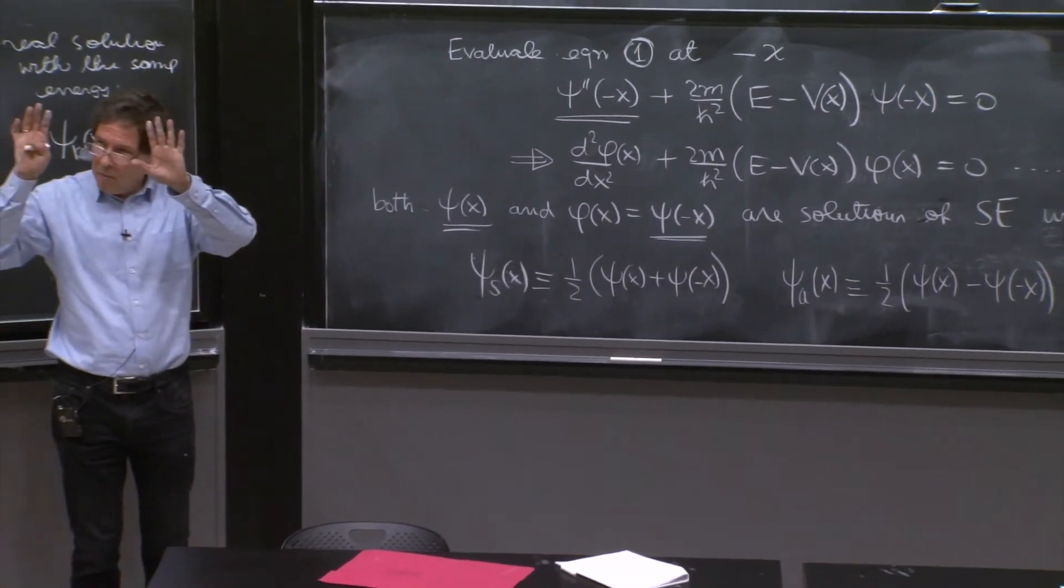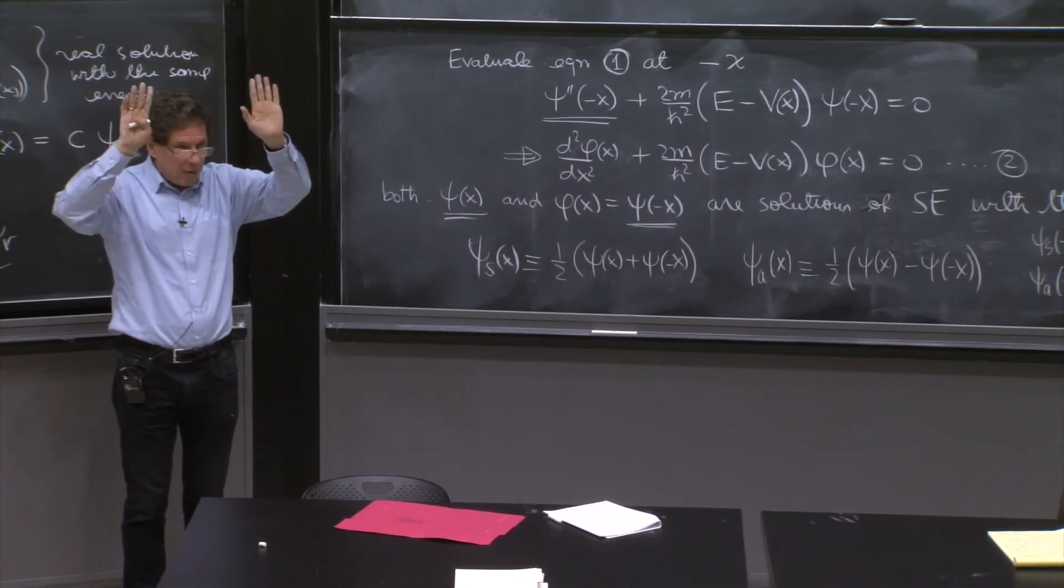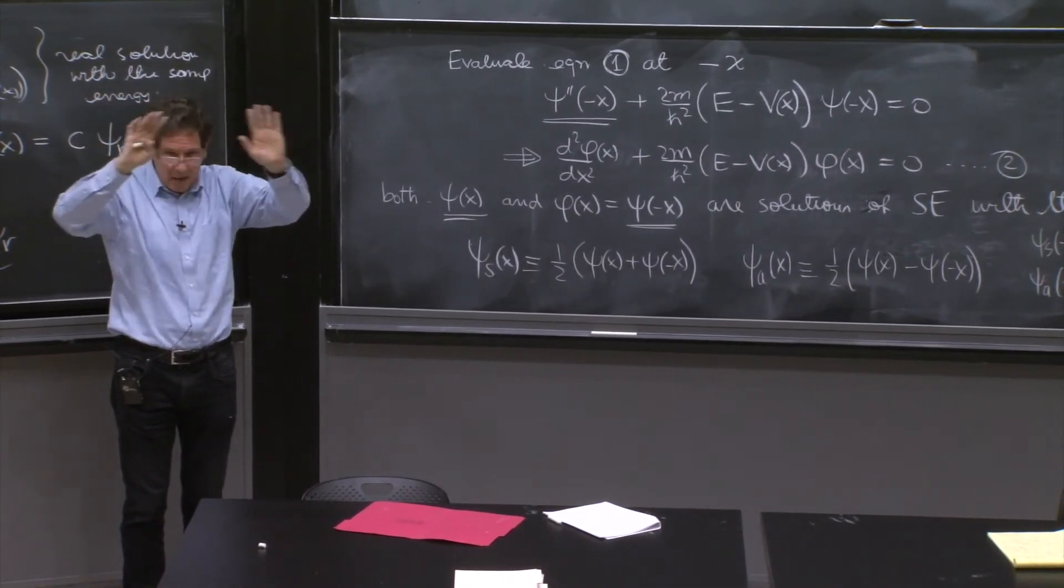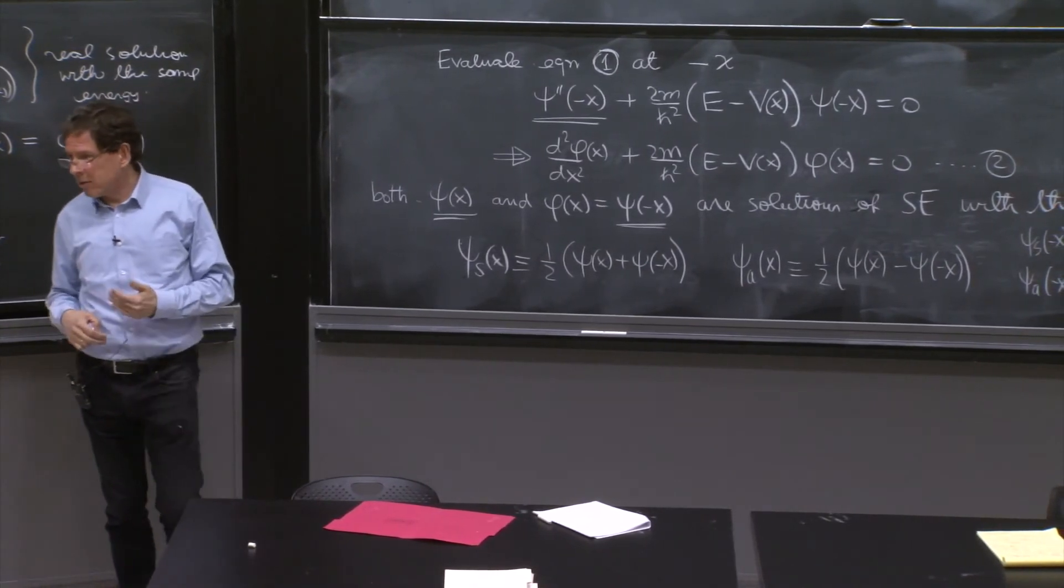Here it's changed by a sign. So ψ_a(-x) is equal to -ψ_a(x). And these two are solutions with the same energy, ψ_s and ψ_a. You see, if you have two, so remember that key fact. If you have two solutions of the Schrödinger equation with the same energy, any linear combination of them is a solution with the same energy.